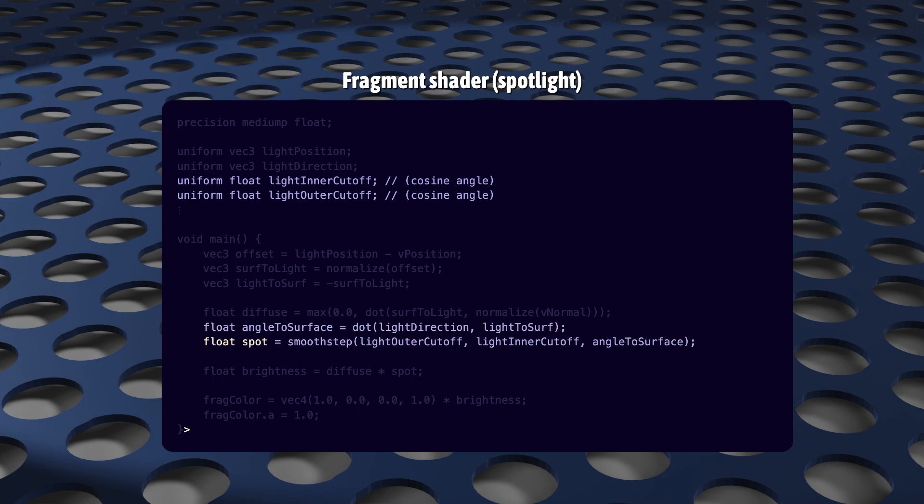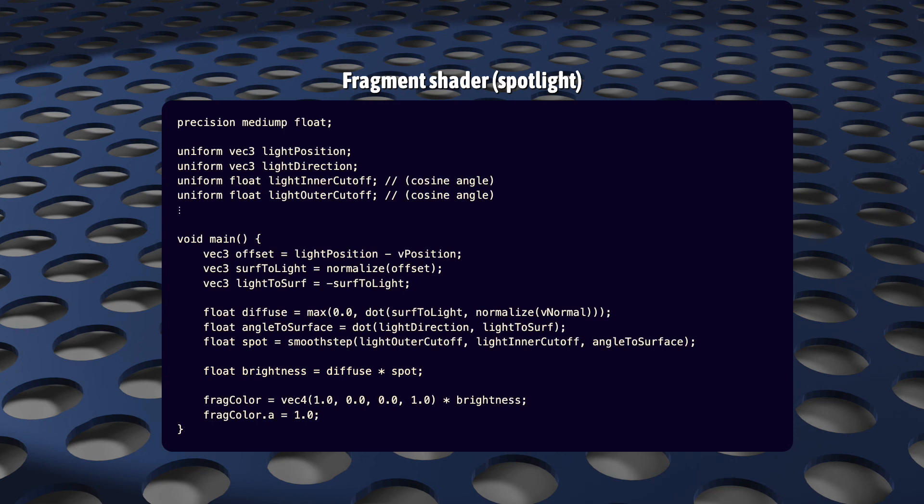The result is our spotlighting brightness factor. And we just need to multiply that with our diffuse value to get our final brightness. And our code looks like this.